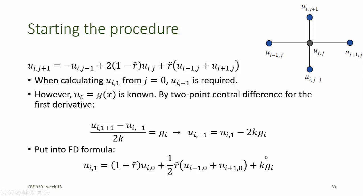The function g here represents our initial condition on the derivative of u with respect to time. Once we've computed all of the u at i for j equals 1, we now have enough values to compute u sub i at j equals 2, u sub i at j equals 3, and so on.